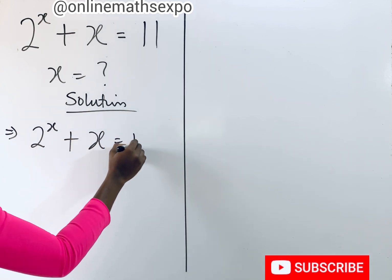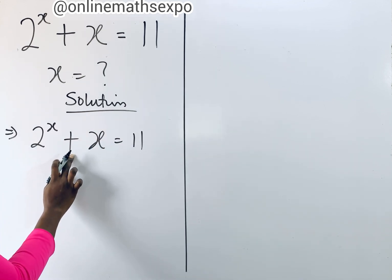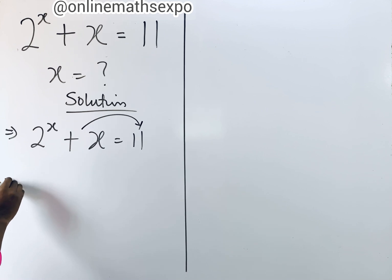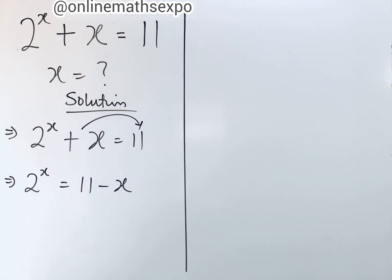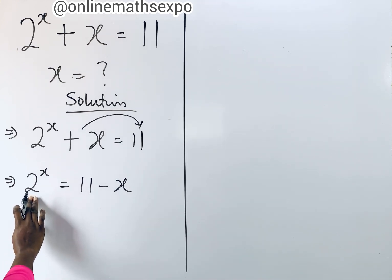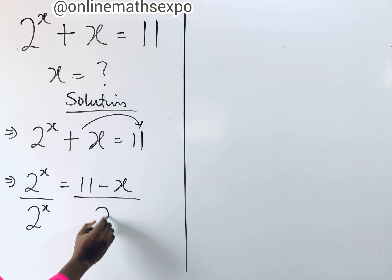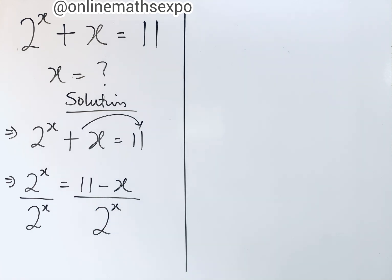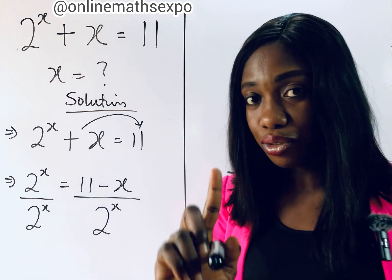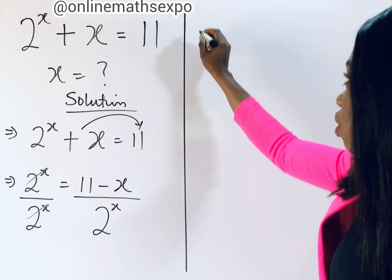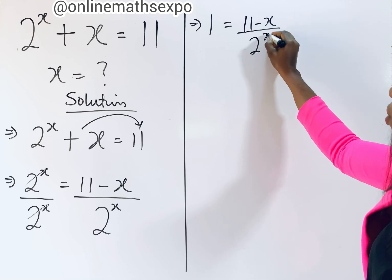What do we do next? We are going to move the x to the right side. Because it's addition, we subtract, so we have 2 to the power of x is equal to 11 minus x. Next, we divide both sides by 2 to the power of x, and when you do that, you get 1 is equal to (11 minus x) divided by 2 to the power of x.